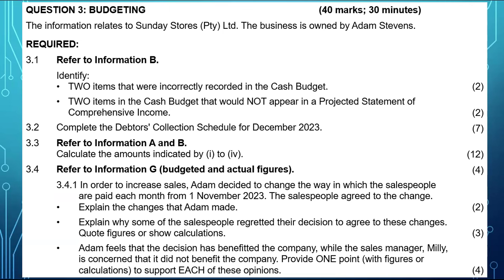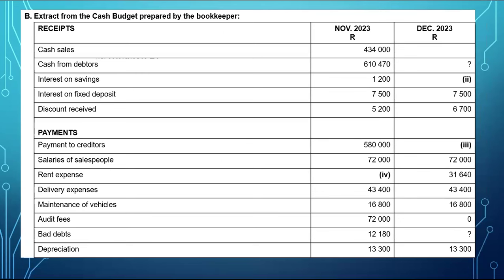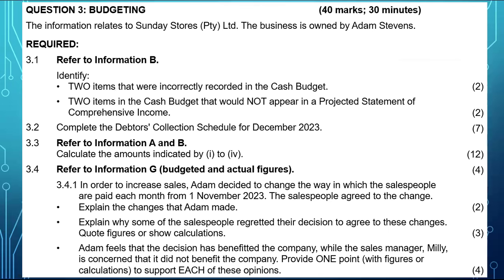The information relates to Sunday's Doors Pty Ltd. The business is owned by Adam Stevens. For 3.1, we have to refer to information B. We have to use information B to identify two items that were incorrectly recorded in the cash budget.